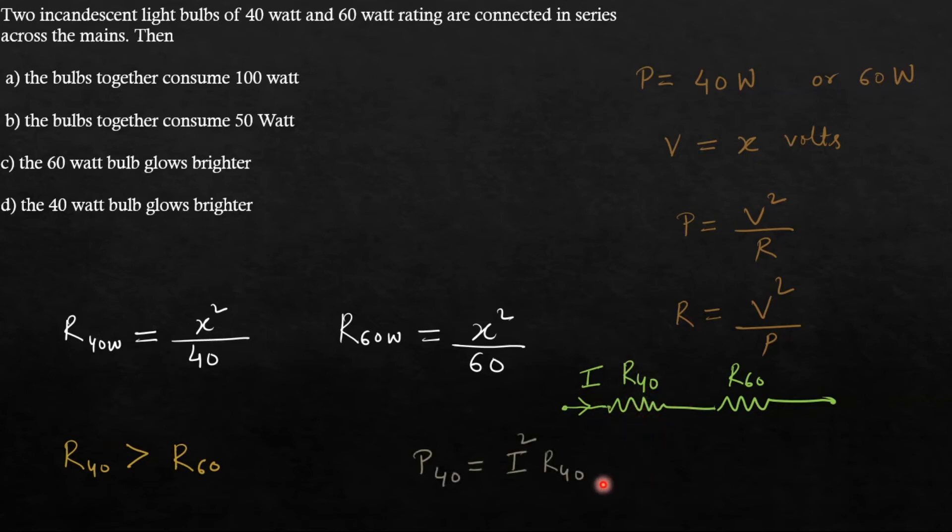So power consumed by 40 Watt bulb will be I square into R40. That is I square R. Now power consumed by R60 would be I square into R60. Now from here you can clearly see that the power consumed by 40 Watt bulb is greater, because R40 is greater than R60.